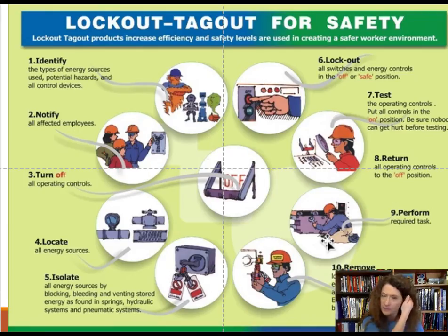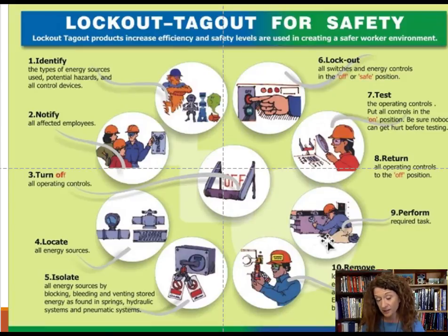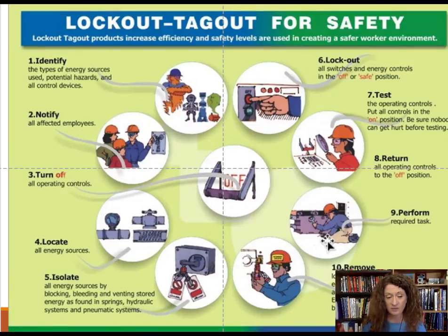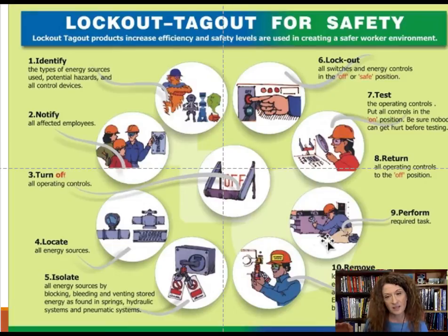Step 8: After testing, return the switch to the off position — even if it didn't energize — so that when it's finally turned back on, it won't already be in the on position. Think of it like a light switch: you turn the switch off, cut the power, lock it out, then go test the switch by turning it on. If the light doesn't come on, you're good (step 7). Then turn the switch back off — that is step 8.